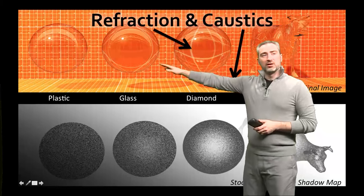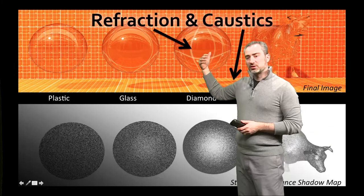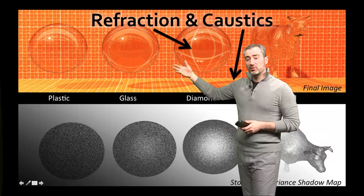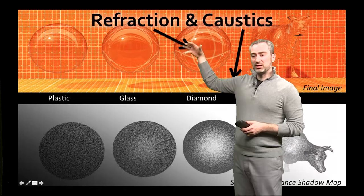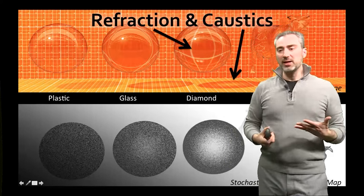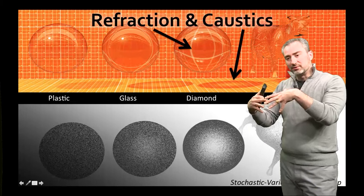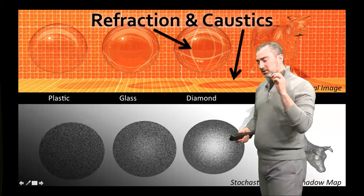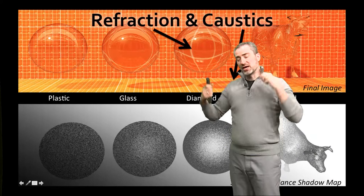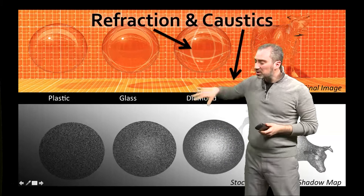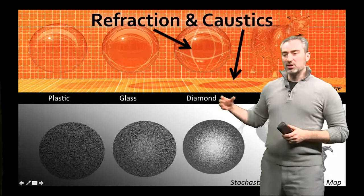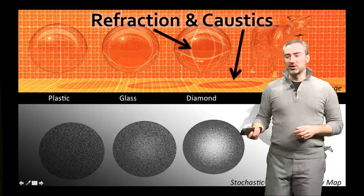We can do refraction and caustics. First, three different indices of refraction are shown for the same shape: a plastic sphere, a glass sphere, and a diamond sphere, plus a diamond cow to show the same index of refraction with a different shape. In the top image you can clearly see refraction of the background increasing with index of refraction. In the shadows, as the index increases, we focus the light down. At the bottom is a visualization of the stochastic shadow map before computing variance, cropped to the visible section. The noise from stochastic shadowing gets blurred out when put into the variance shadow map, and you can see how light gets focused at the center towards normal incidence even on a complicated shape like the cow.